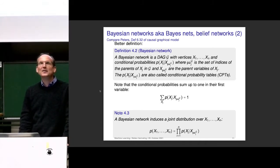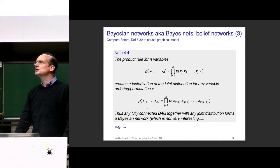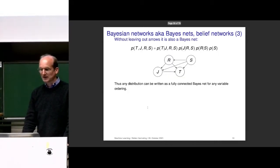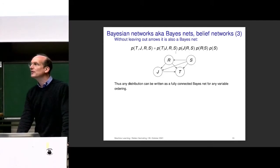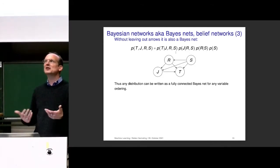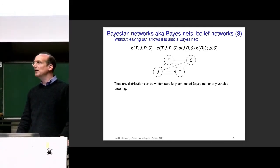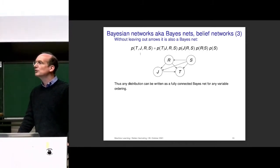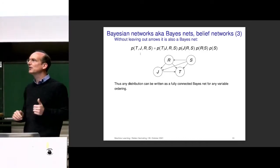Now we have graphs which give us a way to factorize our joint distribution along the graph. The graph tells us: a node that doesn't have incoming edges is not conditioned on anything, and you are always conditioned on your parents. Curiously, the number of directed acyclic graphs you can have with four variables corresponds to the number of ways you can apply the product rule to a joint distribution, or alternatively, to the number of ways you can permute those variables and use them in the ordering of the permutations.